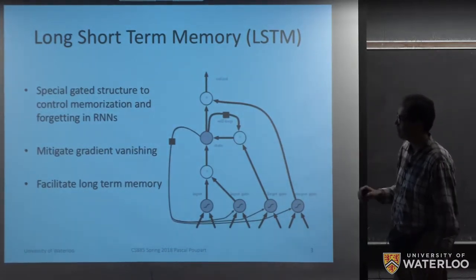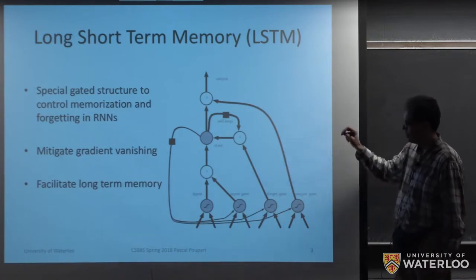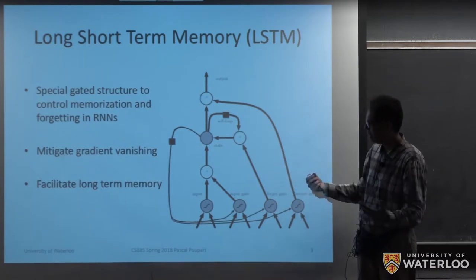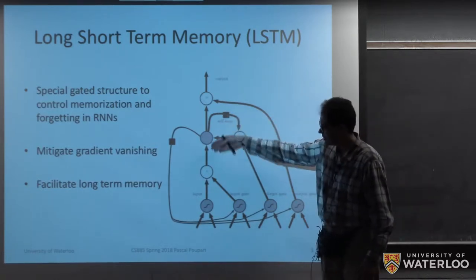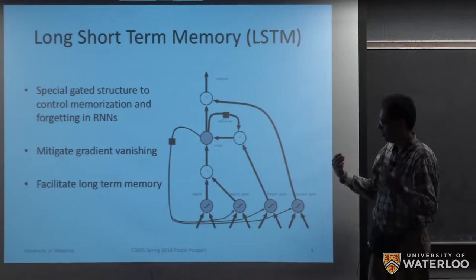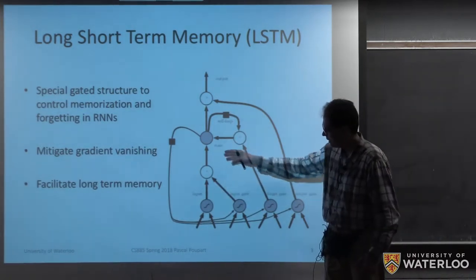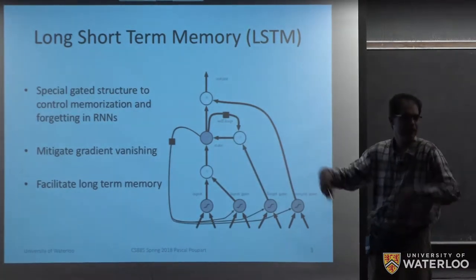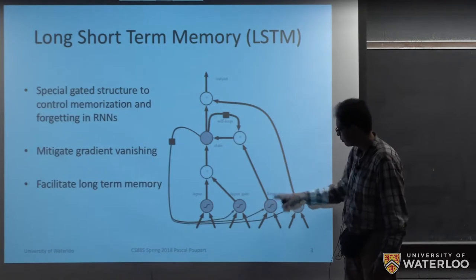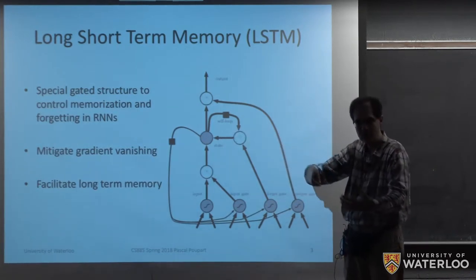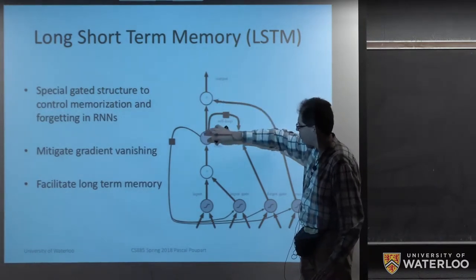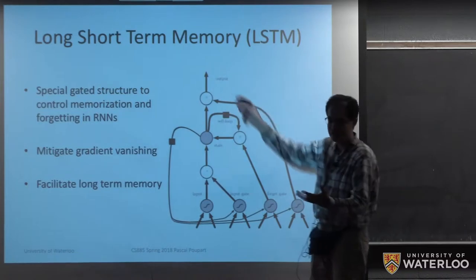A long short-term memory network has the following architecture. We have various gates that control what happens inside the network, and the benefit is that the memory — essentially the core of the cell — can be controlled more explicitly. There's usually an input at every step, and a gate that decides whether that input will make it into the memory. There is also a forget gate that decides whether what is already stored will remain or be erased.